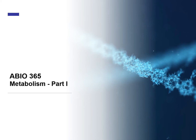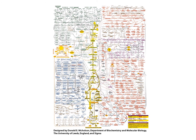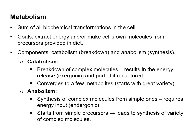In this and the coming three lectures, we'll discuss metabolism. Metabolism comprises so many, almost uncountable, different ways to process metabolites and their intermediates in the living system. This diagram shows only a fraction of such metabolic pathways. I hope you can appreciate their complexity, the steps, and the intersections for multiple pathways. We'll discuss only critical metabolic pathways, their mechanisms, and their regulations for these four lectures. Metabolism is a sum of all biochemical transformation in the cell for sustaining life, and its goal is to extract energy and/or make the cell's own molecules from precursors provided in diets.